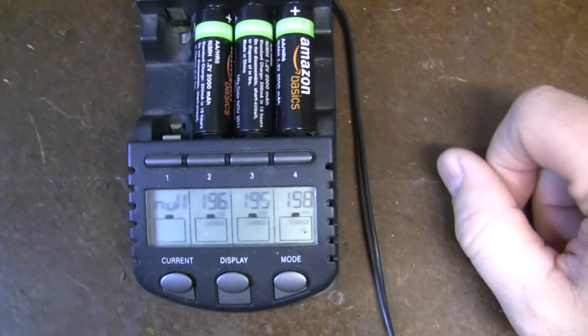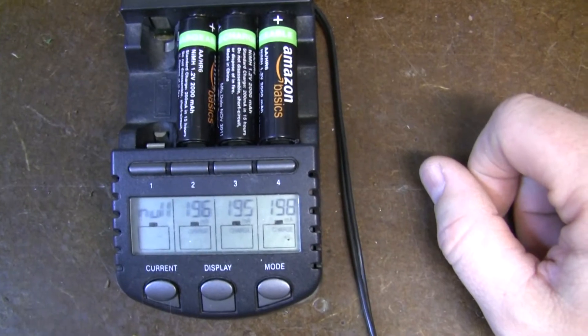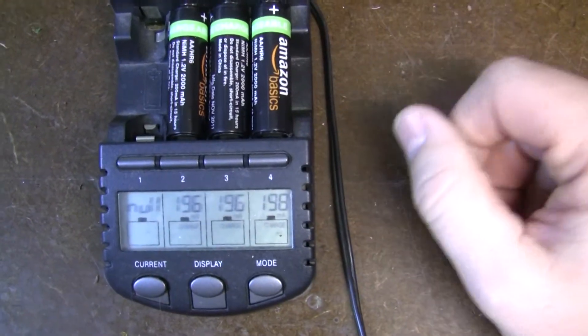Alright guys, that's it. That's how you fix Amazon basic nickel metal hydride batteries when they show up no on your charger.